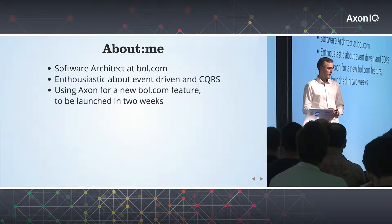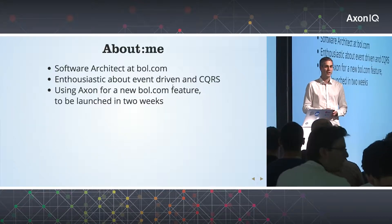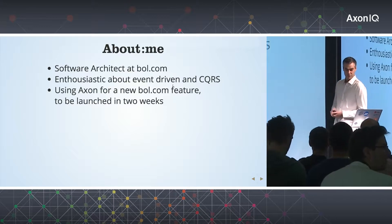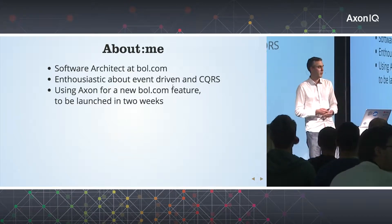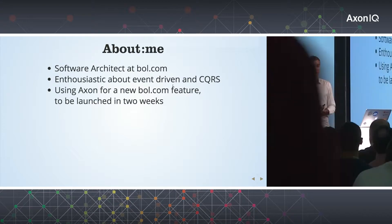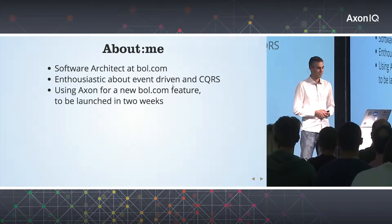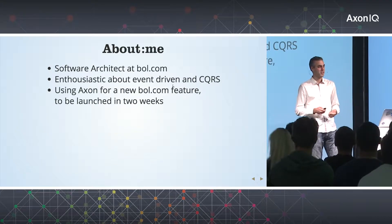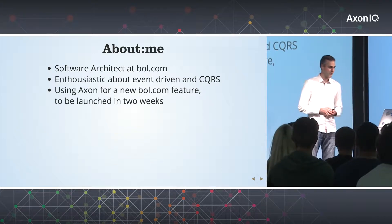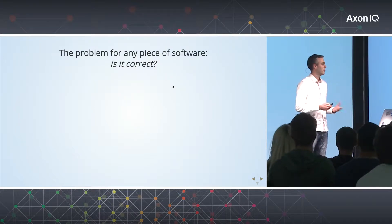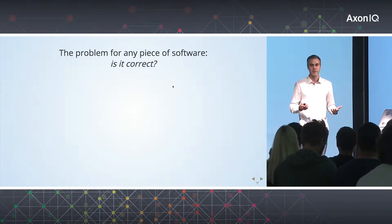About a year ago we started looking at a new service, a new feature for Bold.com, so I thought that Axon would be a good choice to implement that with. This is going to be launched in two weeks, so one question becomes more and more urgent as we approach that launch date — and that is applicable to every piece of software: is it correct?